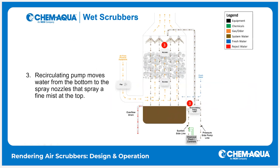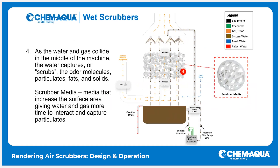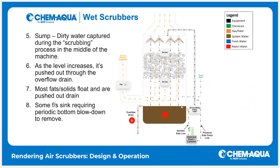It's important to make sure your recirculating pump is working at all times. As the water and gas collide inside the machine, the water cools things and captures the fats and solids with the help of media increasing the surface area. Those then drop out to the bottom into the sump, where we capture the dirty water, fats, and solids. As that sump level increases, the water is pushed out through an overflow drain or blown out through the recirculating pump side. Most fats and solids float, so we can push them out through an overflow drain.